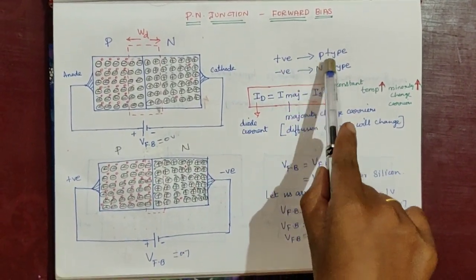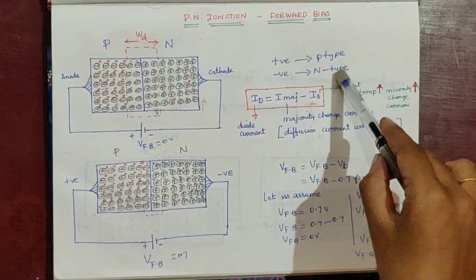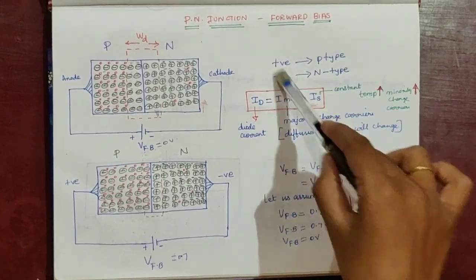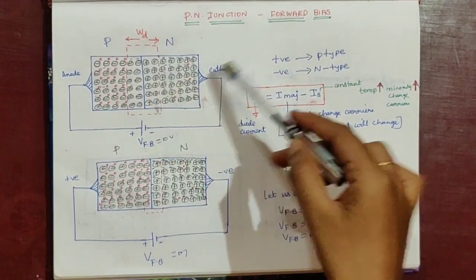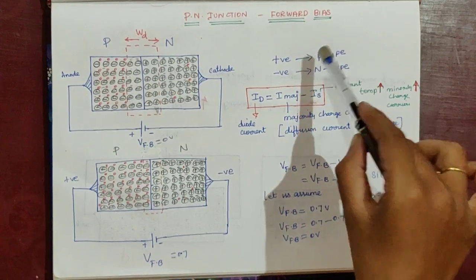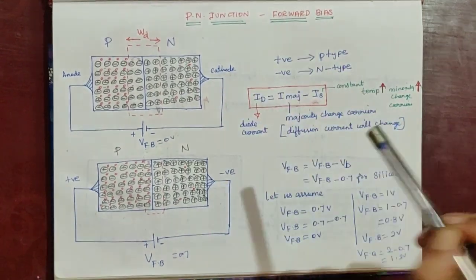Positive should be connected with P-type and negative should be connected with N-type. In this case, we connect the battery to the PN Junction in this format, which is forward bias.